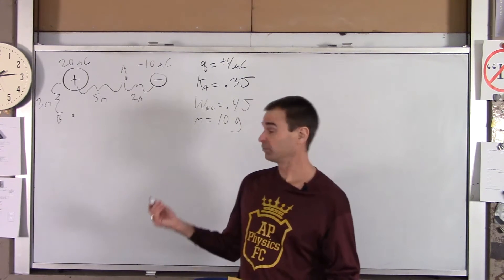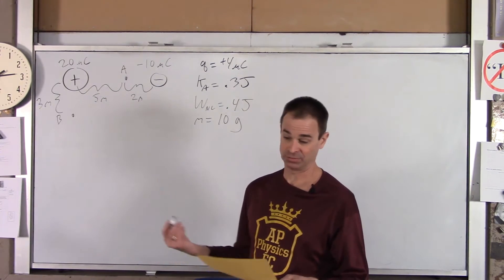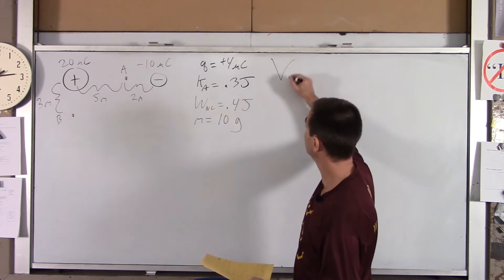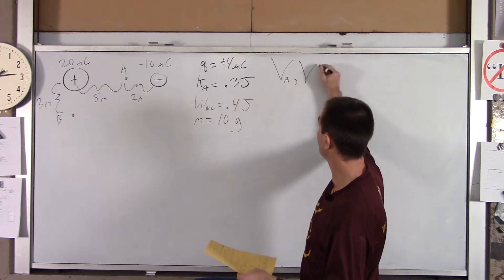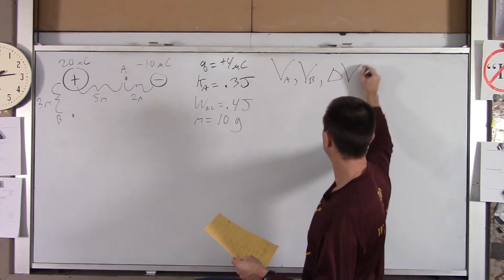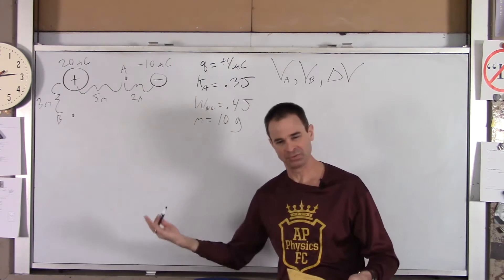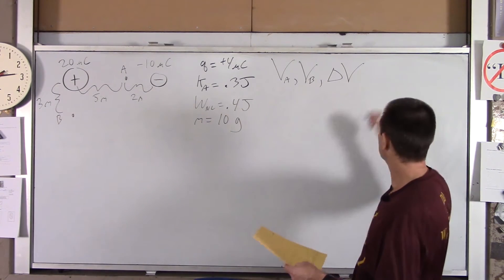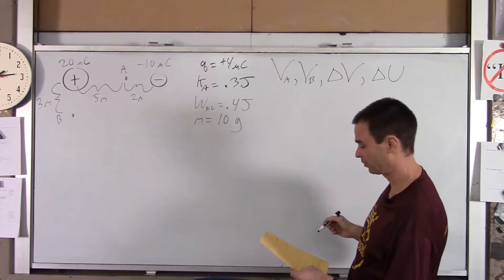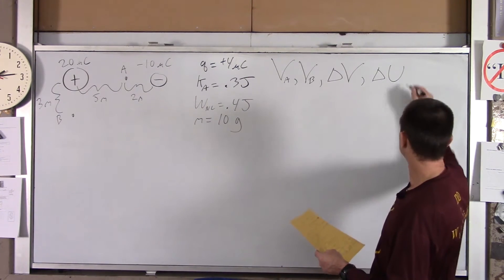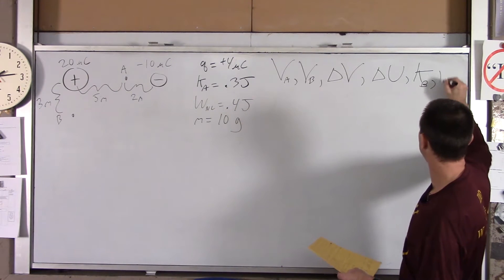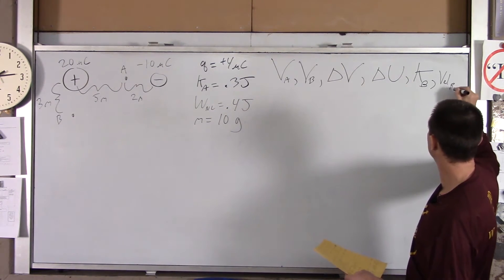What we're going to determine is the following: the voltage at A, the voltage at B, the change in voltage as the charge moves from A to B, the change in potential energy from A to B, the kinetic energy at B, and finally the velocity at B — how fast is it going when it gets to B?